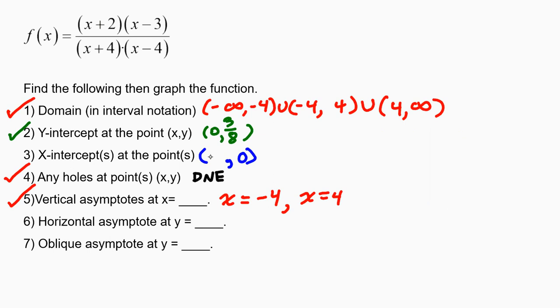So the two x-intercepts as x, y coordinates would be at negative 2 comma 0 and at positive 3 comma 0. So we've finished number 3 now. We're looking at number 6 and number 7. We won't have an answer for both of these. We might have a horizontal asymptote. And if we do, we will not have a slant or oblique asymptote.